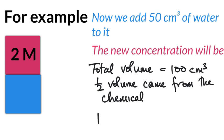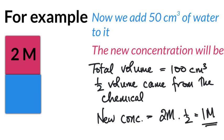So that means my new concentration is going to be 2M times a half, or 1M. So I've got a solution that's made of 1M. I've halved it by adding the same volume of water. I hope that's okay.